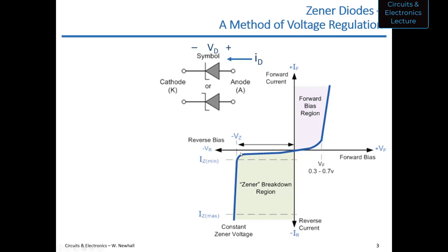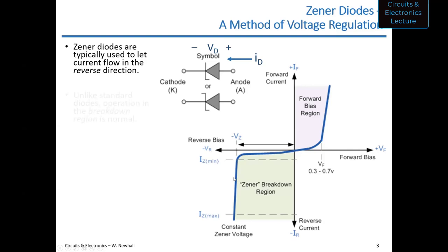Operating in breakdown doesn't break the zener diode — it just operates along this really steep curve. These diodes are typically used to let current flow in the reverse direction at the negative Vz value with a negative Id. Operating in this reverse-bias breakdown region is perfectly normal and is the primary function of a zener diode, though you can also operate in the forward-bias region.